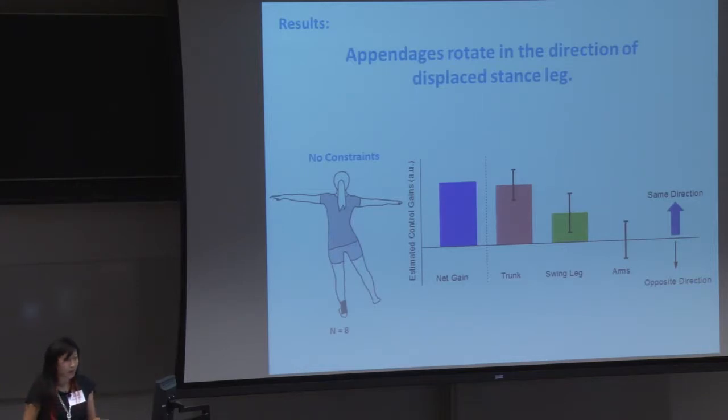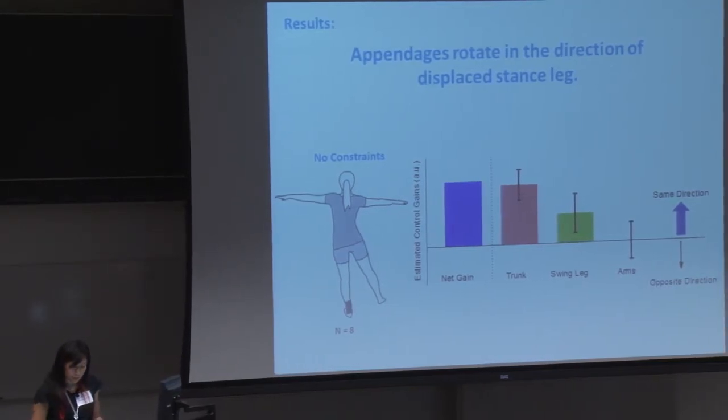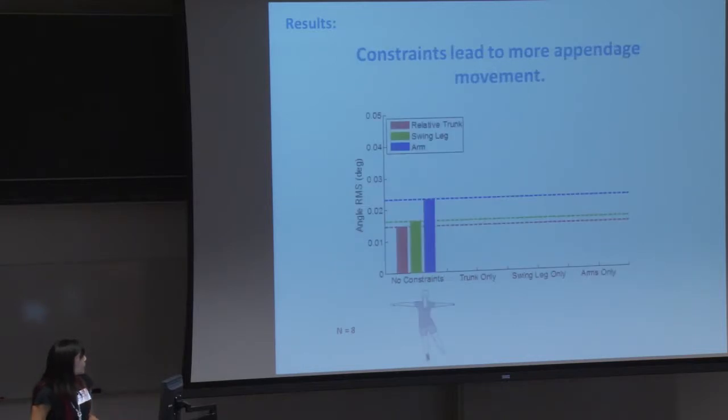It's very small, but we think maybe perhaps because your arms have to act through the trunk, there's something perhaps different going on in humans. So, and then we can also look at how constraints lead to more appendage movement. So this is the RMS, so it's kind of how visible the motion is. And the arms are the most visible motion, even though they have the smallest gain. And if we only let you use your trunk, you have more movement. And the same holds with if we only let you use your swing leg and also your arms. So if you were to constrain appendages, you would see more movement in the cases where you can only use them above the baseline case.